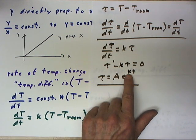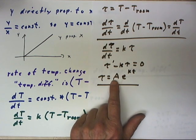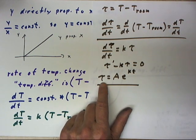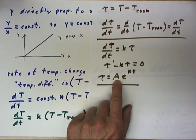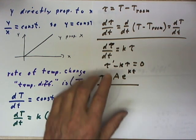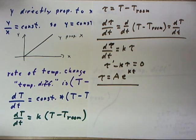Now determining the value of k, determining the value of A depends on the circumstances. It could be that you have an initial temperature that's lower than the temperature of the room, in which case tau would be negative, A would be negative, k might be positive or negative.